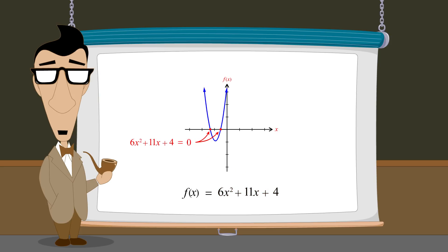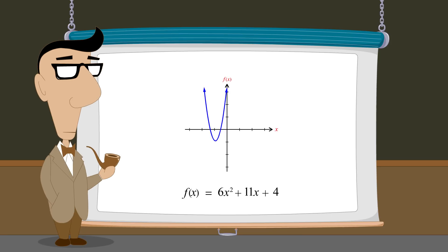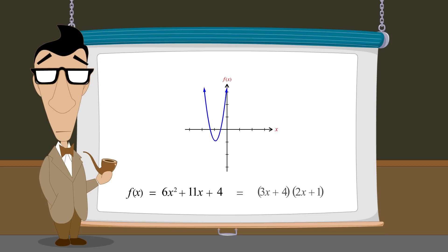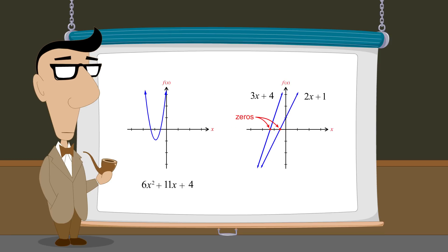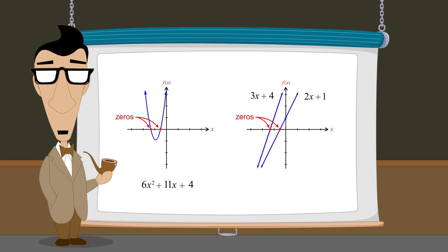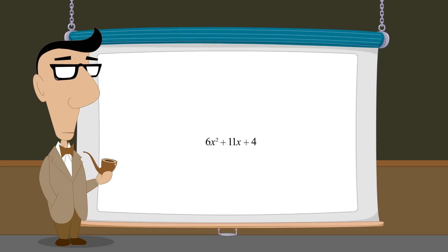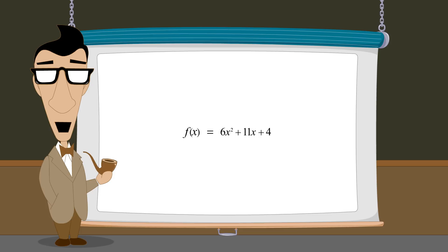In the previous lecture, we introduced an interesting trick for solving quadratic equations. We showed that it is often possible to factor a quadratic function into the product of two linear functions, and the zeros of those linear functions will be identical to the zeros of the quadratic function, and therefore will be the solutions to the quadratic equation. So given a specific quadratic function, how do we go about finding its linear factors?